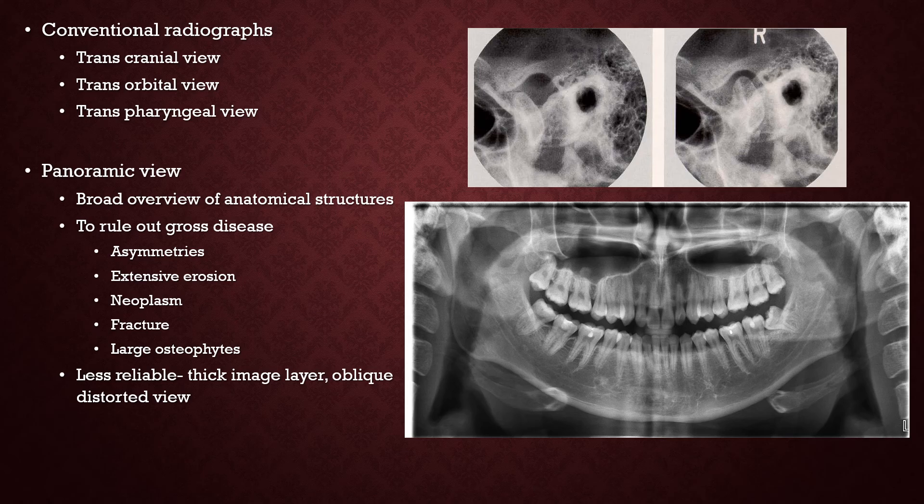Conventional radiographs like the transcranial, transorbital and transpharyngeal views are obsolete now. The panoramic view is primarily used to get a broad overview of anatomical structures of the TMJ and can help rule out gross disease like asymmetries, extensive erosion, neoplasm, fracture or large osteophytes. Minor details are difficult to delineate on panoramic view, and it may be less reliable to solely base your diagnosis on a panoramic view, especially for the TMJ because it has thicker image layers and an oblique distorted view.